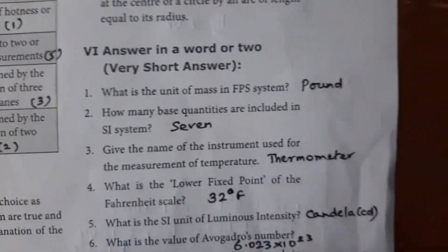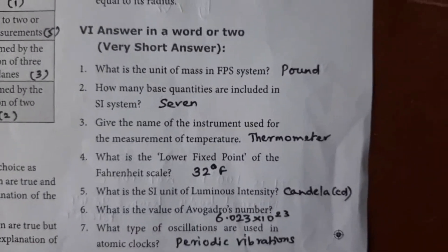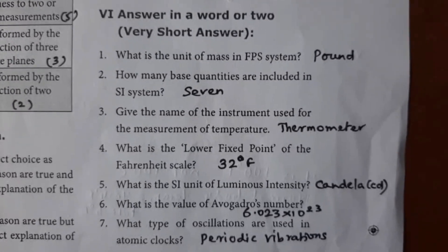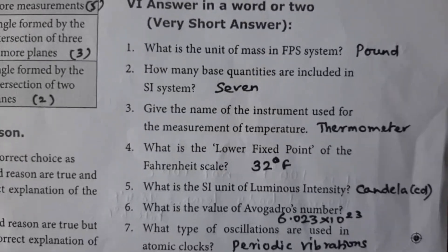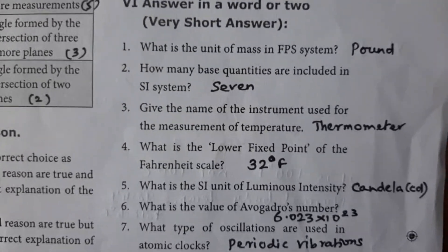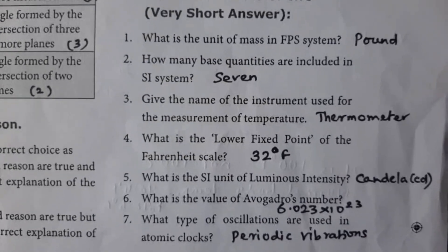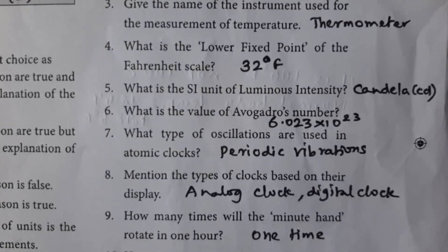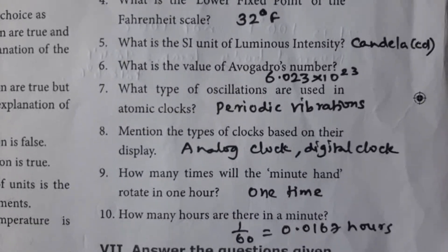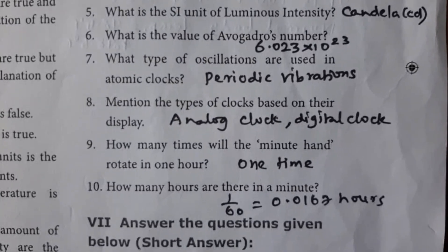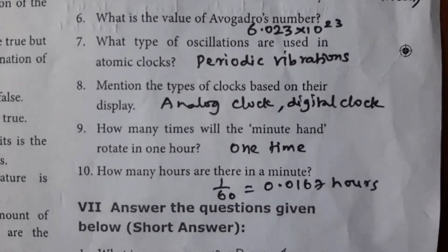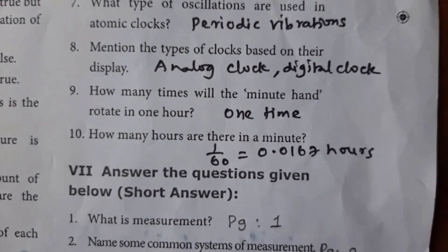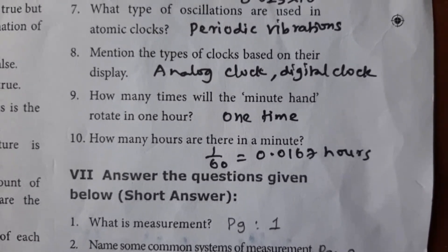Short answer questions. What is the unit of mass in the FPS system? How many base quantities are included in the SI system? Name the instrument used for measurement of temperature — thermometer. What is the lower fixed point of the Fahrenheit scale — 32 degrees Fahrenheit. What is the SI unit of luminous intensity — candela (cd). What is the value of Avogadro's number — 6.023 × 10²³. What type of oscillation is used in atomic clocks — periodic vibration. Types of clocks based on display — analog clock and digital clock. How many times will the minute hand rotate in one hour — one time. How many hours are there in a minute — 1/60, that is 0.0167 hours.